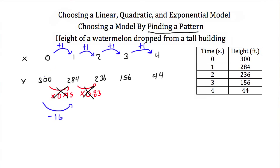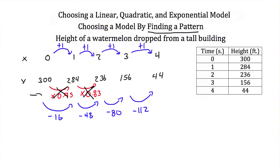Let's keep checking our differences. From 284 to 236 that's a loss of 48. From 236 to 156 that's a loss of 80. And from 156 to 44 that's a loss of 112. My first order differences are not consistent, so it's not a linear model either.